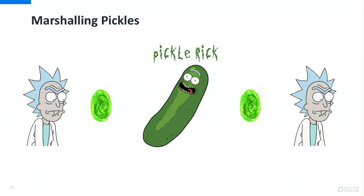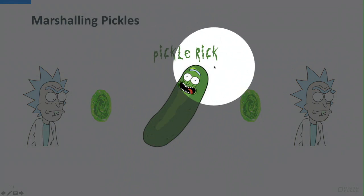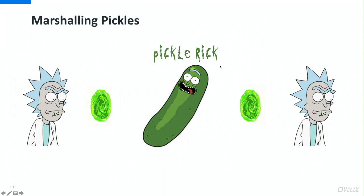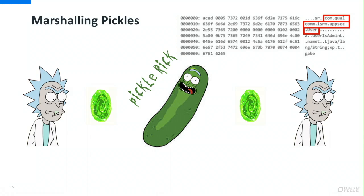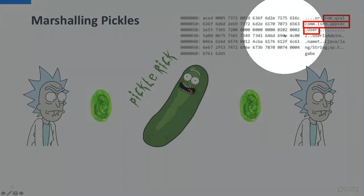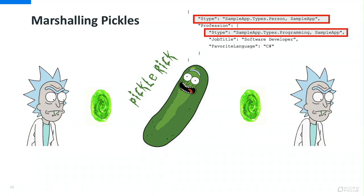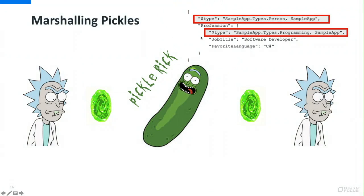The issue is that we are not sending just the pickle itself, but we are sending Pickle Rick — the serialized data with the type information as well. This is what is known as the type discriminator. If you are familiar with Java serialization, even though it's a binary format, you will find class names or type names in the serialized data. Same thing with .NET — for example, in JSON.NET you will find dollar-type attributes containing .NET type and .NET assembly names.